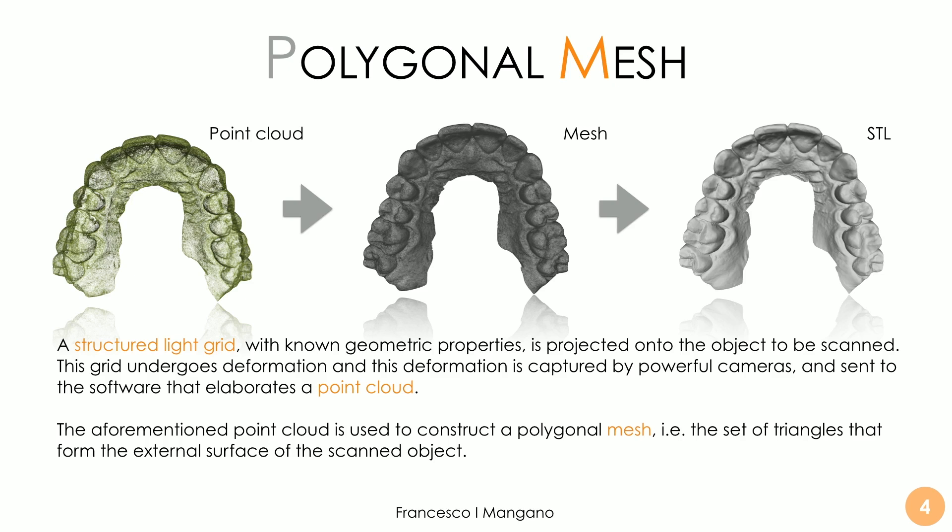We are talking about thousands and thousands of points in space, each represented by spatial coordinates. Then the point cloud is used by the software to construct the polygonal mesh — a set of triangles that form the external surface of the scanned object.